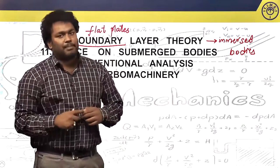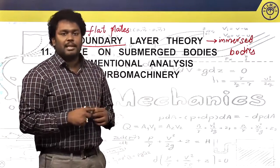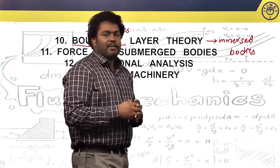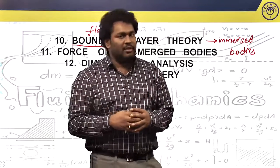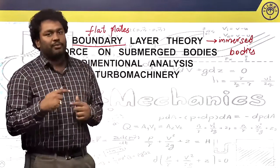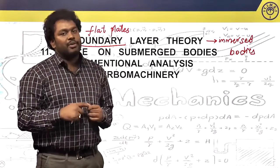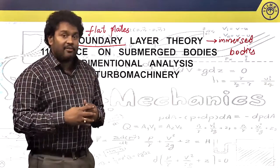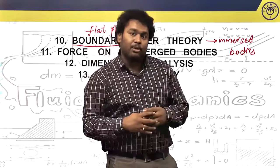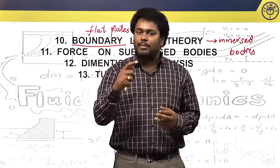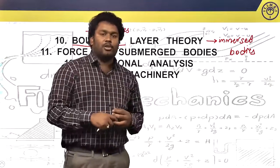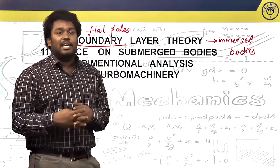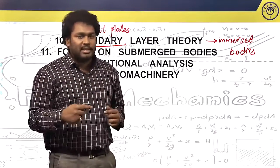Boundary layer formation is always a disadvantage for the object — you need to expend some power and apply forces to clear it up, otherwise it creates resistance. When the free stream velocity hits the leading edge, the velocity drops. The fluid particle needs to reach 99 percent of U-infinity, the free stream velocity, for the boundary layer to clear up. There will be losses in energy, kinetic energy, mass flow rate, and momentum.